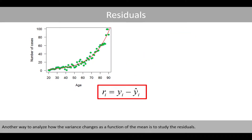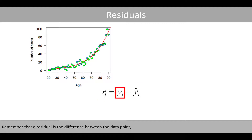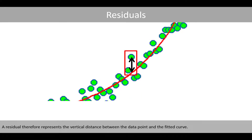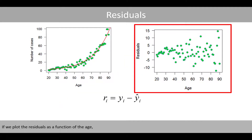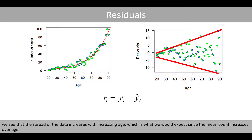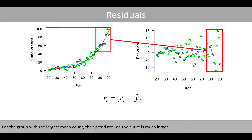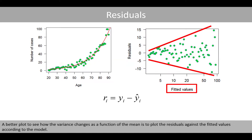Another way to analyze how the variance changes as a function of the mean is to study the residuals. Remember that the residual is the difference between the data point and the fitted or predicted value according to the model — it represents the vertical distance between the data point and the fitted curve. If we plot the residuals as a function of the age, we see that the spread of the data increases with increasing age, which is what we would expect since the mean count increases over age. For the group with the largest mean count, the spread around the curve is much larger compared to the group with the smallest mean count.